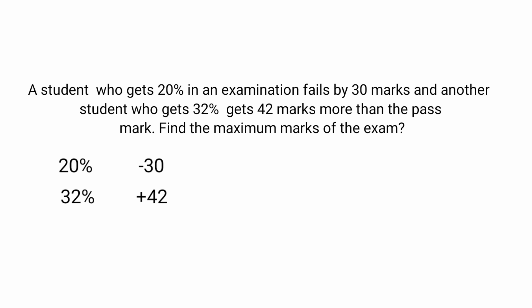To solve this question, we are not using any equations. From the details given, we know that the pass percentage is in between the given percentages. Taking the difference on both sides: the difference in percentage is 32 minus 20, which equals 12%. The difference in marks is 42 minus (negative 30), so 42 plus 30 equals 72. So 12% corresponds to 72 marks. From this, we can calculate 1%: that is 72 divided by 12, which equals 6 marks.